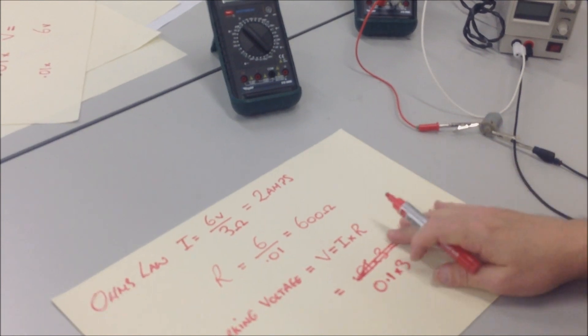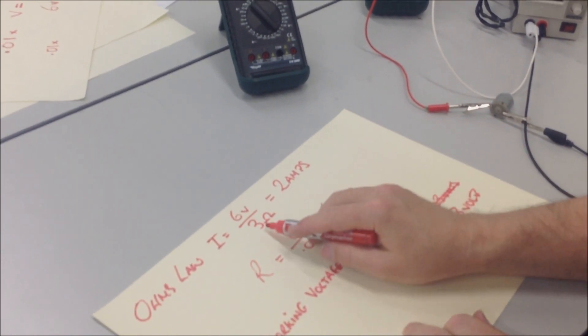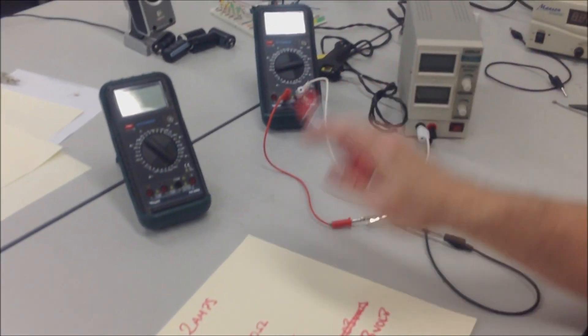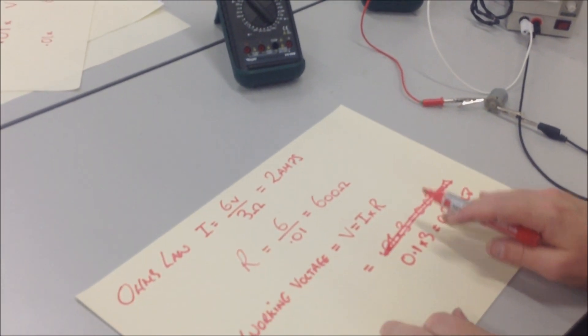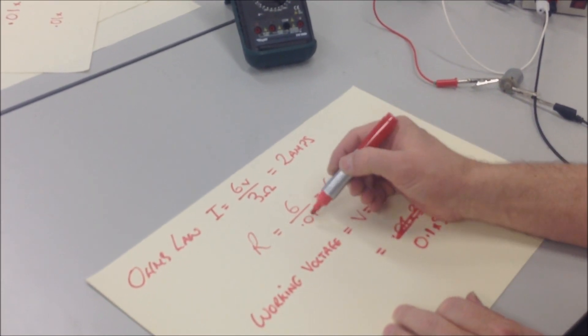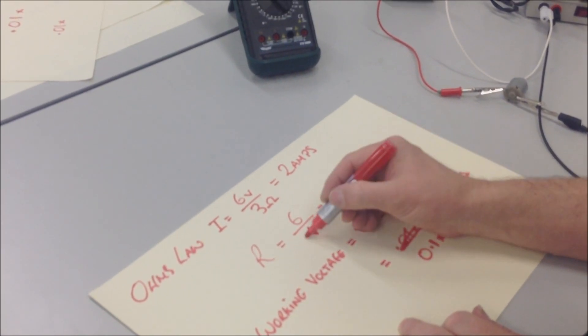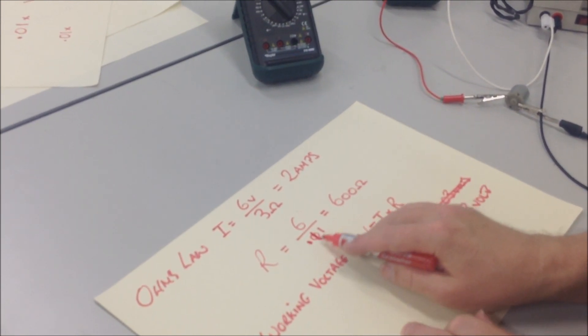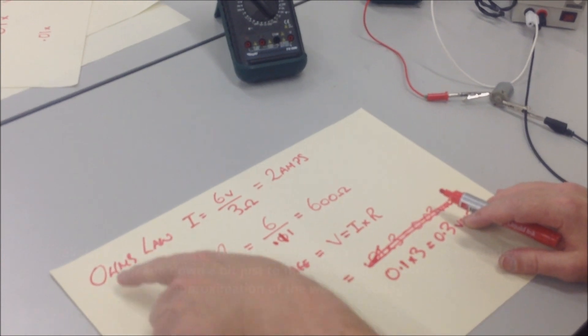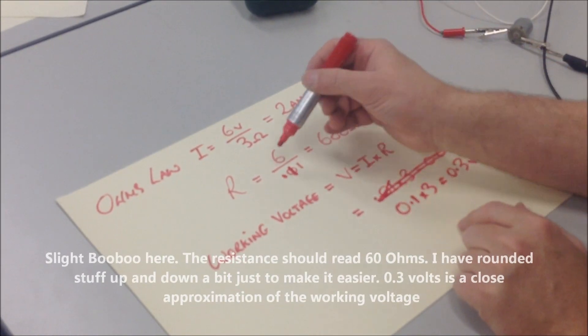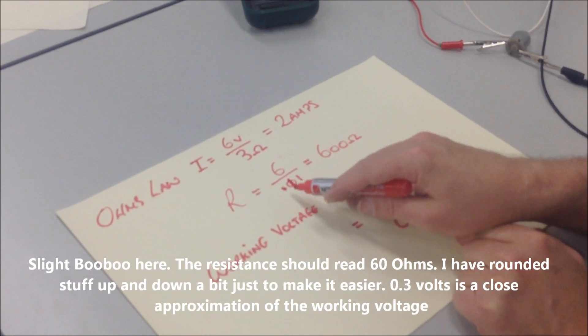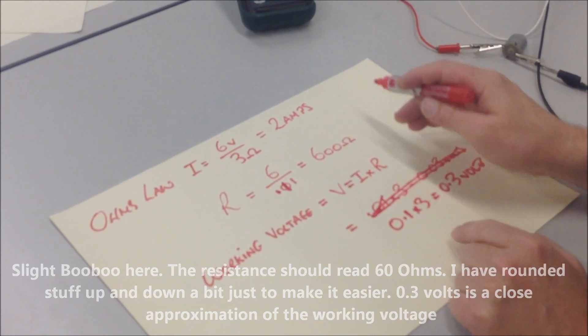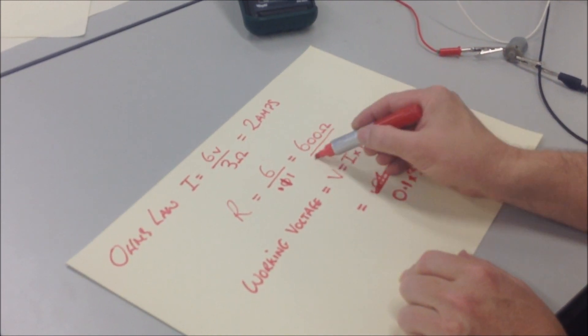Theory tells us that we should be drawing 2 amps. 3 ohms, 6 volts applied, we should be drawing 2 amps. But we're not, we're drawing close to 100 milliamps, give or take. So from Ohm's law, resistance, the voltage divided by the current will give us 600 ohms. 600 ohms.